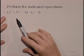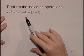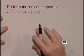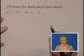Let's perform the indicated operations. We have the quantity x cubed plus 3x squared minus 4 divided by the quantity x minus 1. We're going to set this up as a long division.